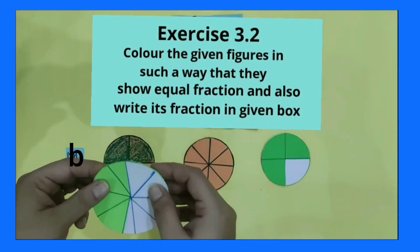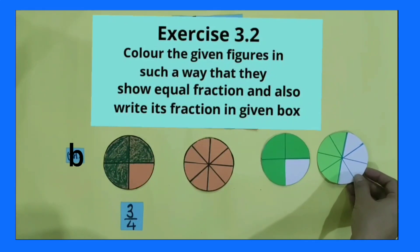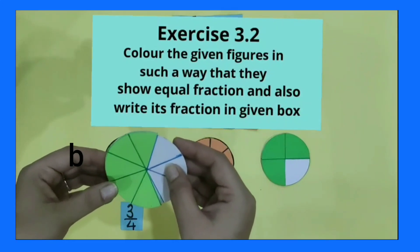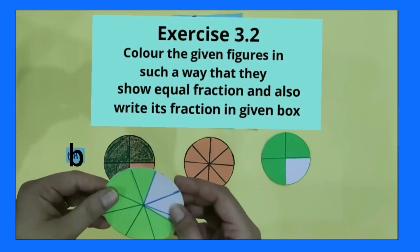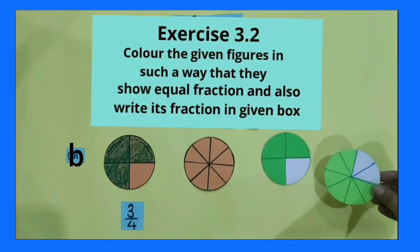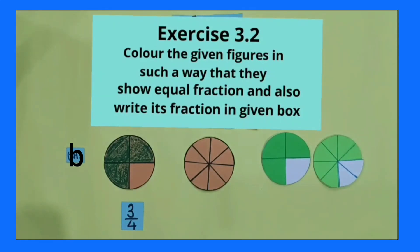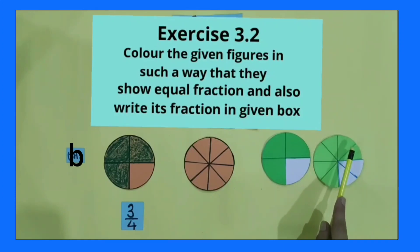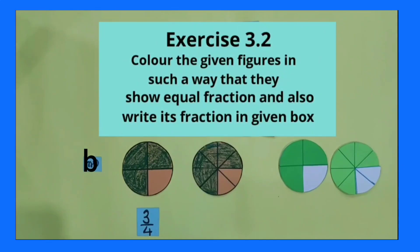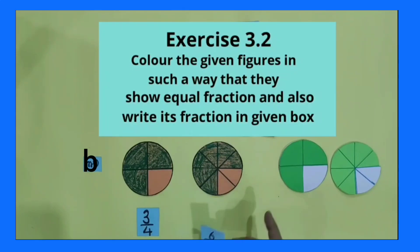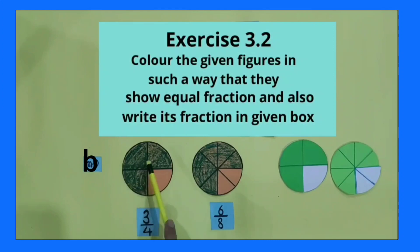These are not equivalent. Now I color the fifth and then the sixth part of the shape. Now compare these two shapes again — are they equivalent? Yes, now these two shapes are equivalent to each other. When I colored 6 parts out of 8 equal parts, these two shapes became equivalent. Its fraction is six by eight. Now students, three by four and six by eight are equivalent to each other because they represent the same part.